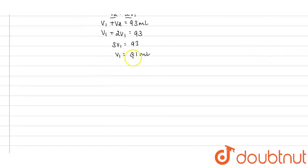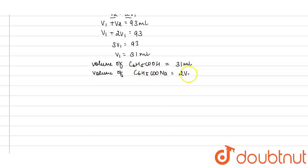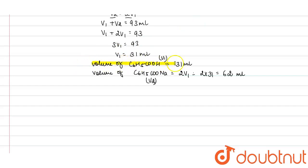Volume of acid, that is C₆H₅COOH (benzoic acid), is 31 mL. Similarly, volume of its salt C₆H₅COONa is V₂ = 2V₁ = 2 × 31 = 62 mL. So the volume of benzoic acid required is 31 mL.